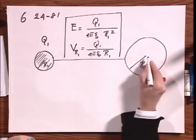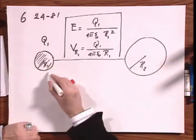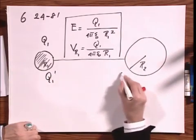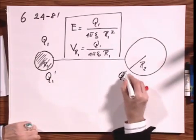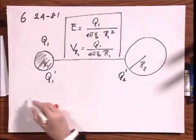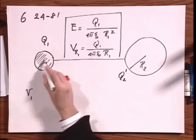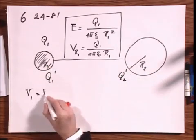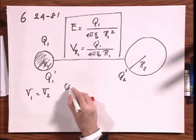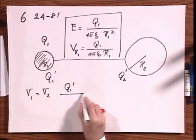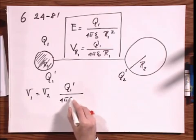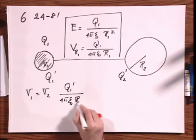So now we connect and charge is going to divide and we're going to have here Q1 prime and we're going to have here Q2 prime. I now make use of the fact that the potential of this one must be the same as the potential as that one, and therefore Q1 prime divided by 4 pi epsilon zero R1 equals Q2 prime divided by 4 pi epsilon zero R2.